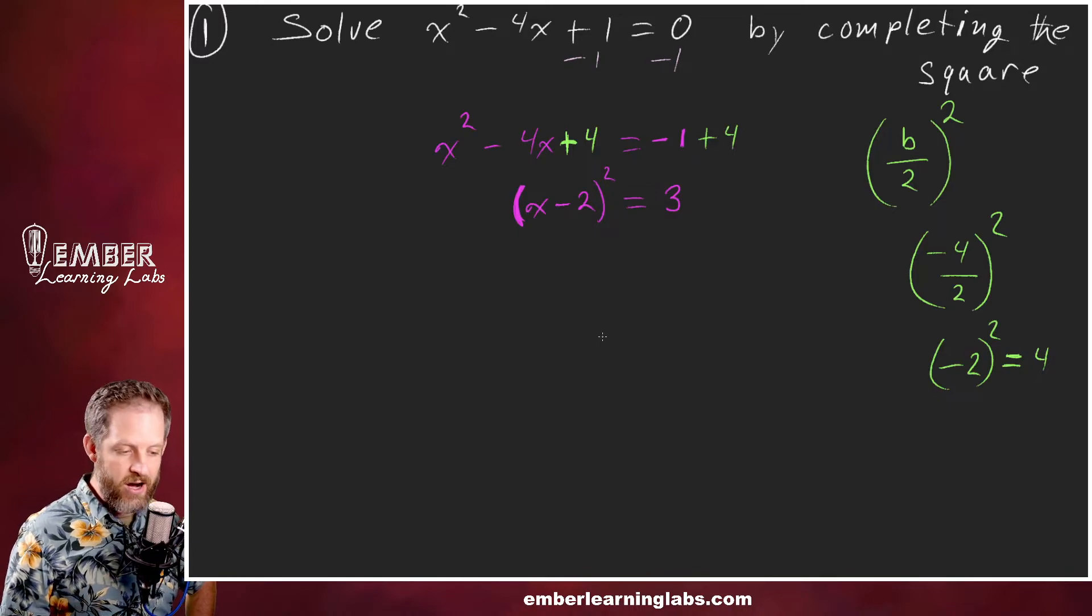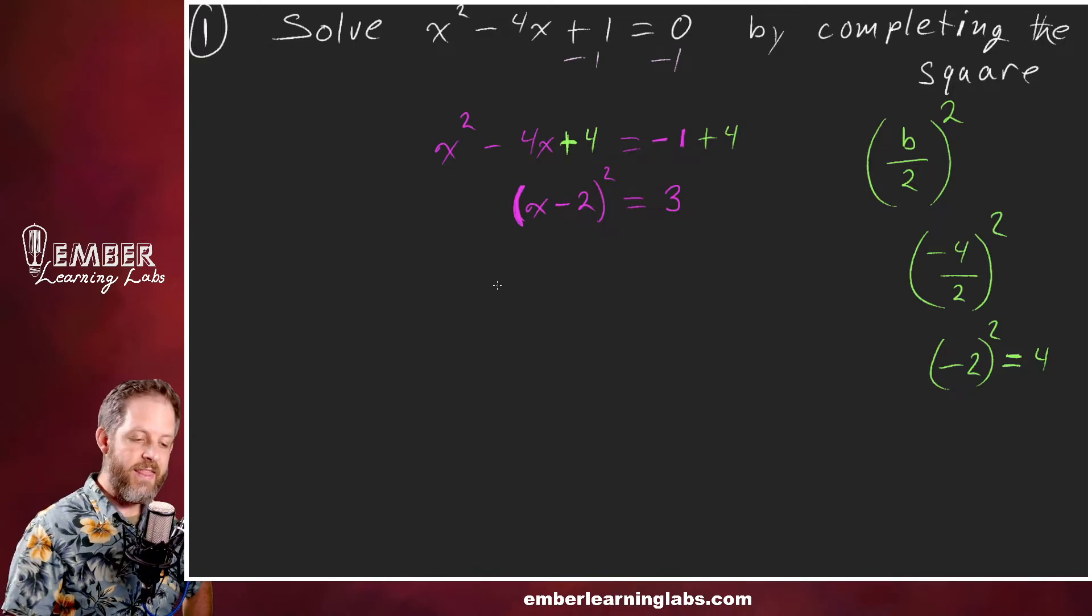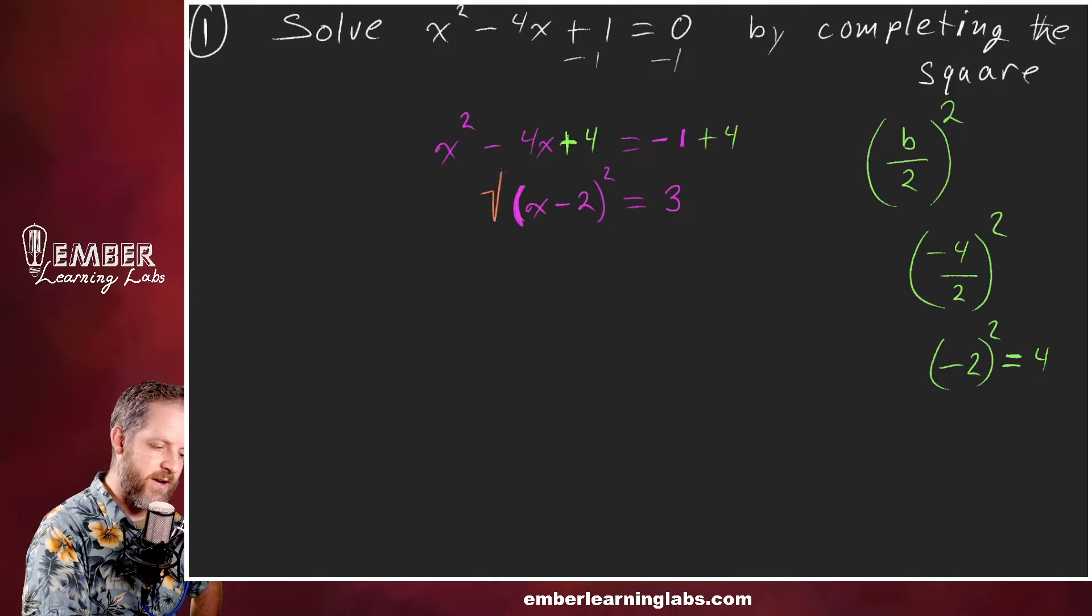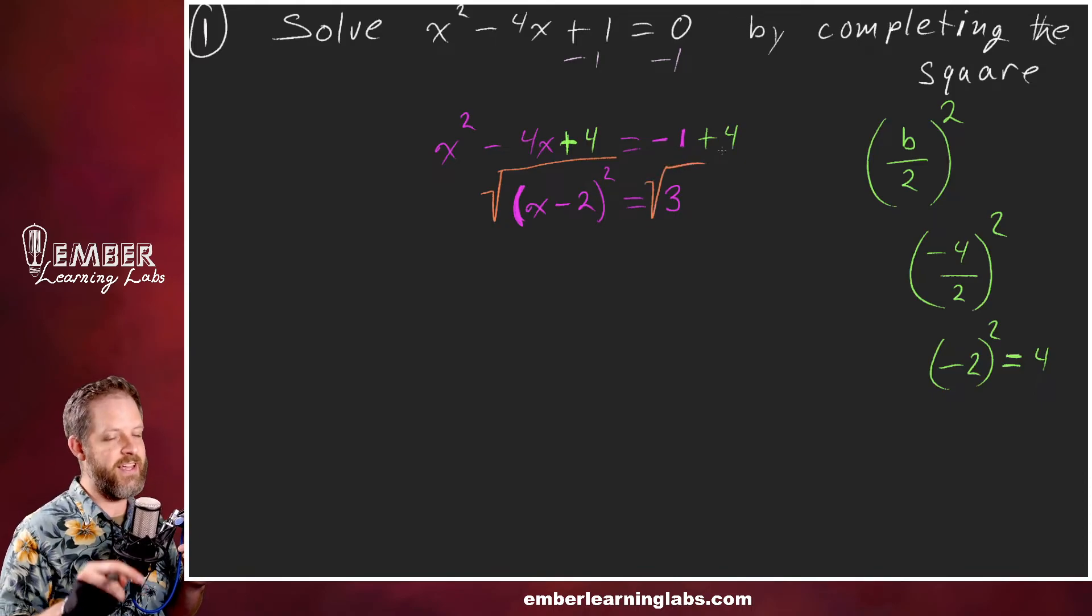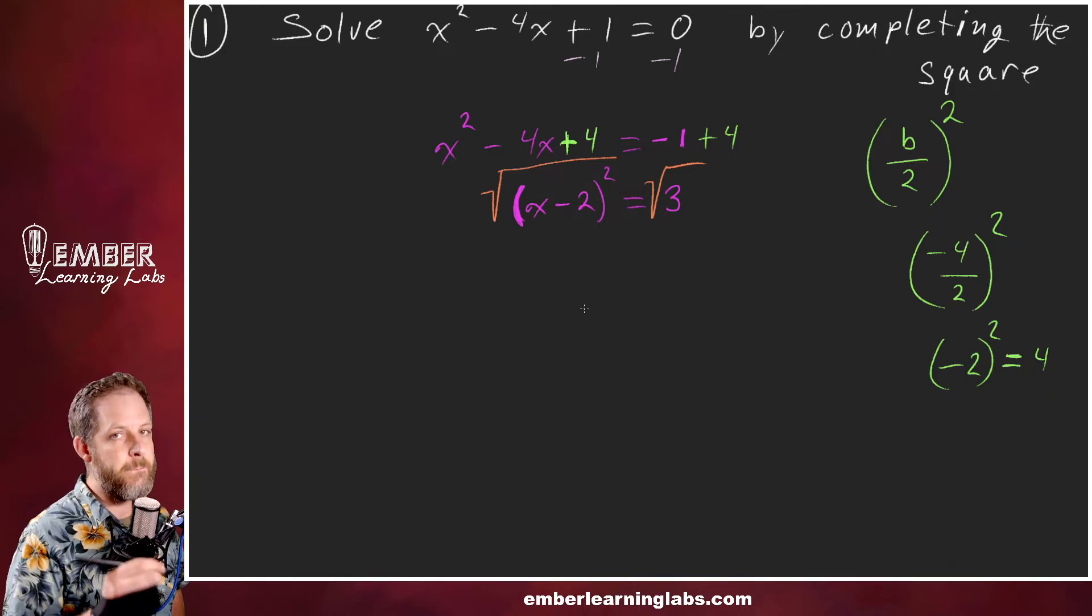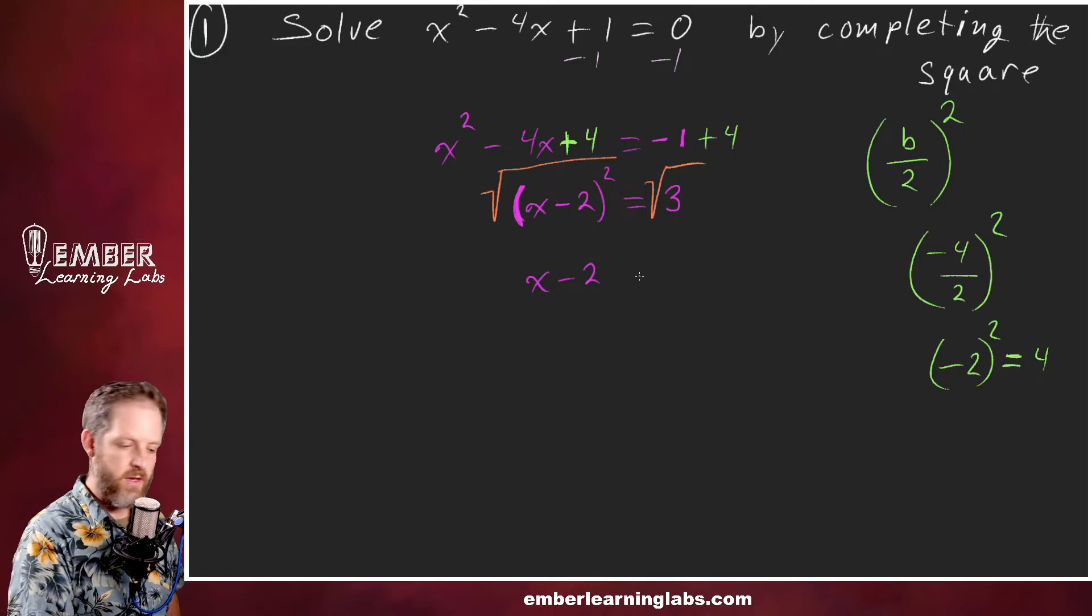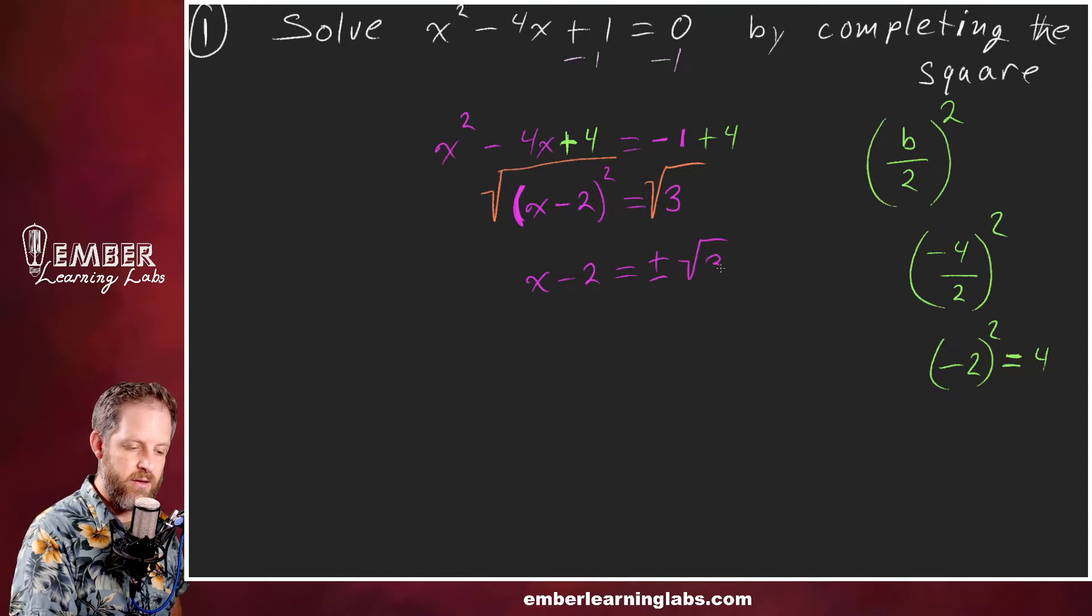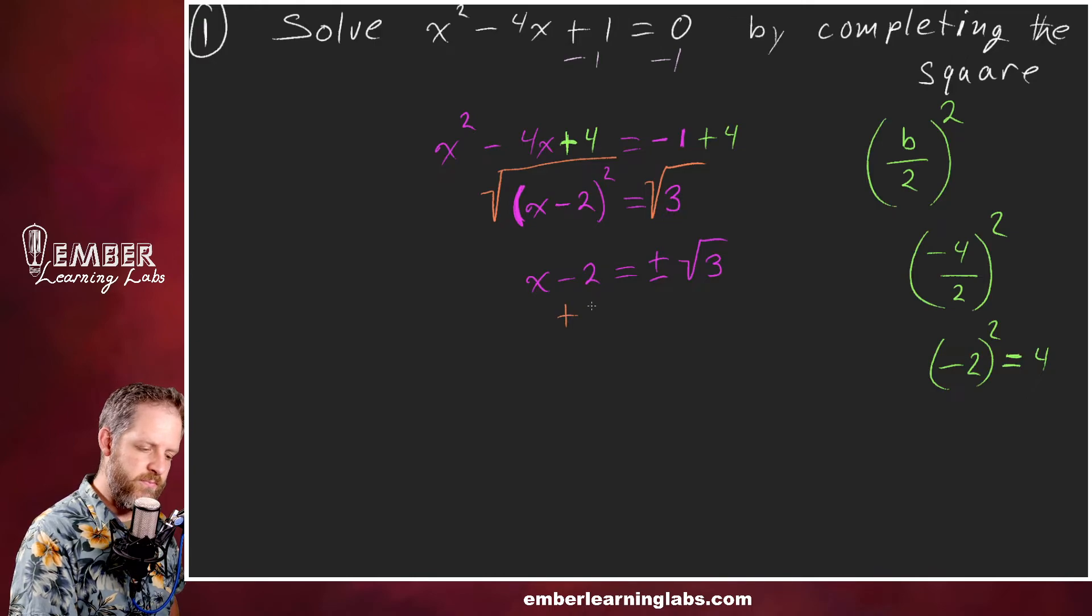Now, since this whole side is squared, the opposite of squaring is unsquaring or square rooting. We're going to take the square root of both sides. This is important: when you take the square root of both sides of an equation, you end up with plus or minus. This turns into x minus 2 equals plus or minus the square root of 3. Then to get rid of this 2, we add it to both sides.